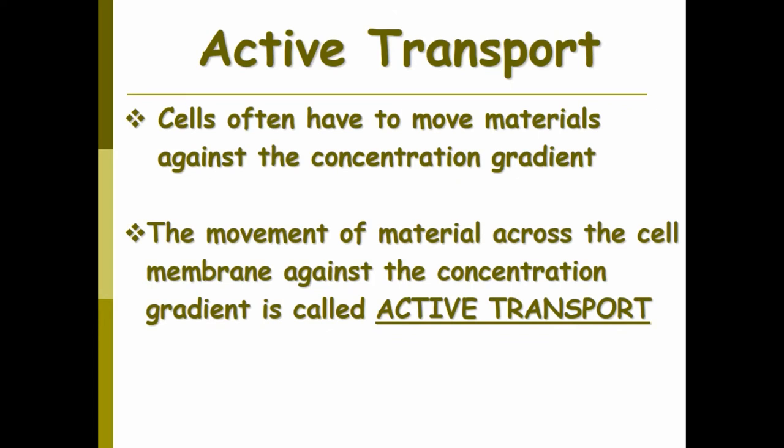Active transport is when you have to move materials against the concentration gradient. A gradient is like a slope or a hill. Everything wants to go from high to low, but in active transport you're moving things against this. When you move things across the membrane against the concentration gradient, it's called active transport, and we'll explore some forms of it today.